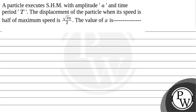Let's read the given question. The question states that a particle executes a simple harmonic motion with amplitude a and time period t. The displacement of the particle when its speed is half of maximum speed is square root of x times a divided by 2. The value of x is to be found.